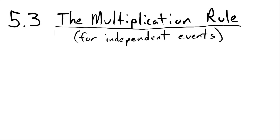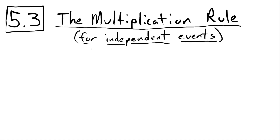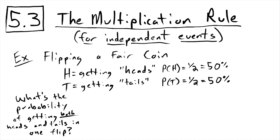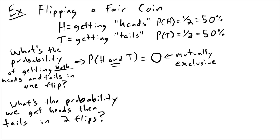This video examines a brand new way to calculate probabilities: the multiplication rule. This rule only works for independent events. To see why a rule like this is necessary, let's look at a quick example using a fair coin. I'll define two events — we might ask: what's the probability of getting both heads and tails in one flip? Obviously this probability is zero; these events are mutually exclusive.